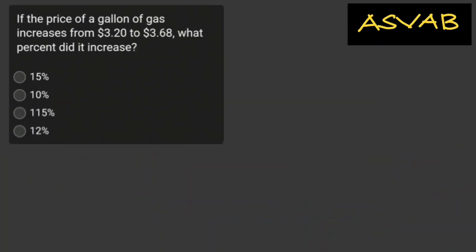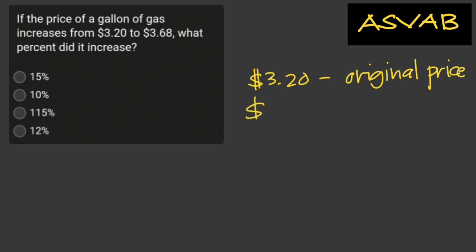If the price of a gallon of gas increases from three dollars and twenty cents to three dollars and sixty-eight cents, what percent did it increase? The original price is three point twenty dollars and the new price is three point sixty-eight dollars. To find the percentage increase, we first find the price increase.